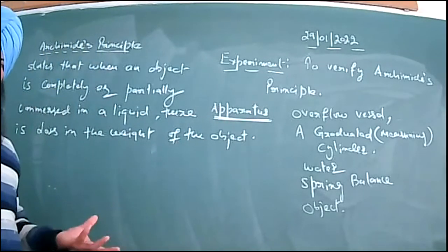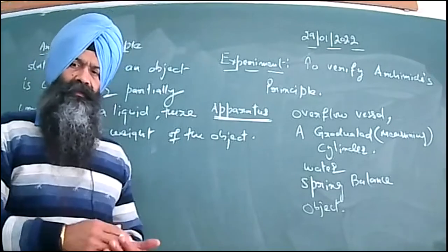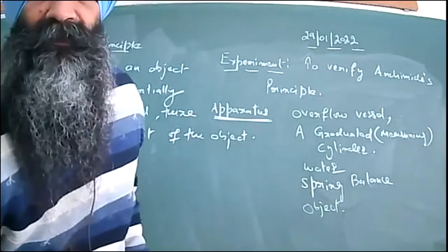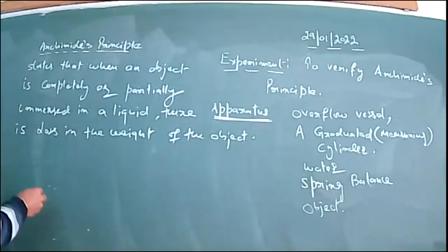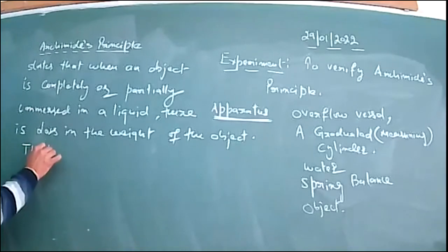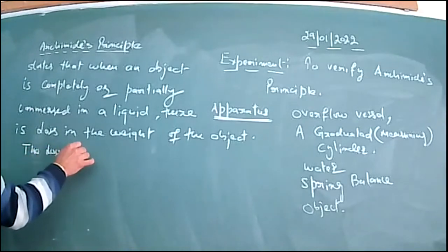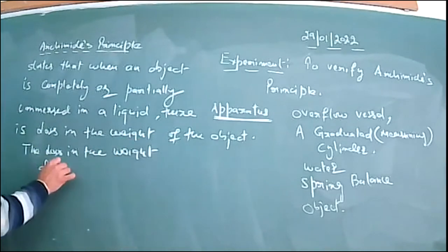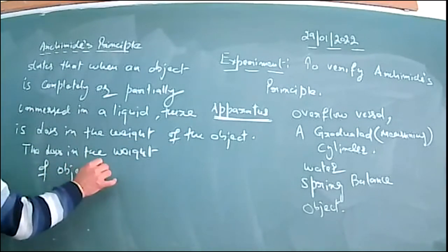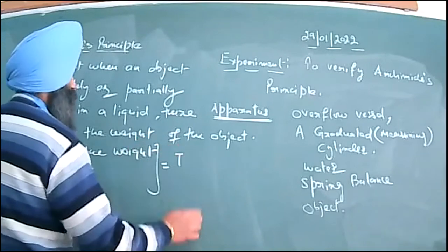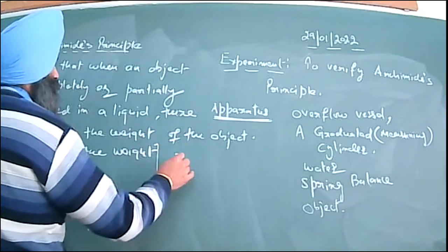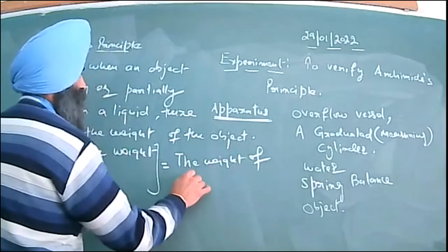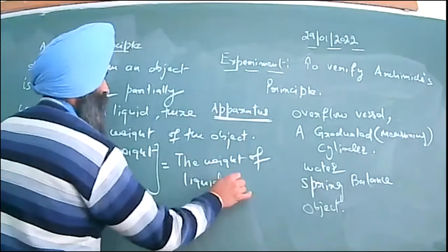And that loss in the weight of the object is equal to the weight of the liquid displaced by it. So we can also say: loss in the weight of the object is equal to the weight of the liquid displaced.